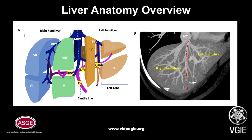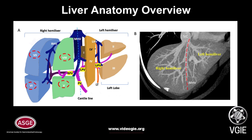The liver is divided into two anatomical lobes — right and left — by an imaginary line named Cantlie's line, which contains the middle hepatic vein and passes through the IVC posteriorly and the gallbladder fossa anteriorly. The left anatomical liver comprises segments 2, 3, and 4, and the right anatomical liver comprises segments 5, 6, 7, and 8.